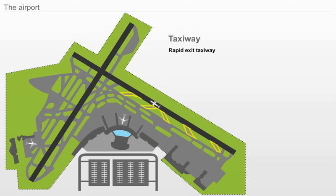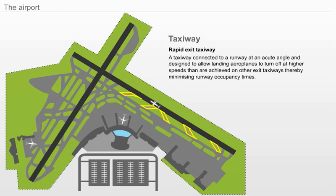C. Rapid Exit Taxiway. A taxiway connected to a runway at an acute angle and designed to allow landing airplanes to turn off at higher speeds than are achieved on other exit taxiways, thereby minimizing runway occupancy times.